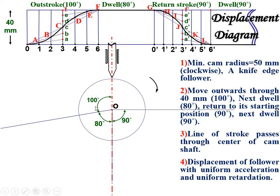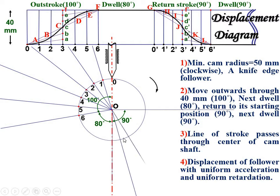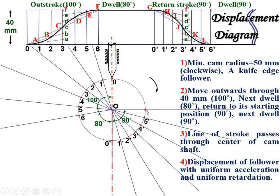Divide the out stroke angle into 6 equal divisions using the compass bisecting method, since you can't directly divide 100 degrees with a compass. Name the divisions 0, 1, 2, 3, 4, 5, 6. Similarly divide the return stroke angle into 6 equal divisions, naming them 0', 1', 2', 3', 4', 5', 6'.